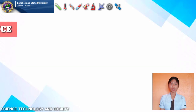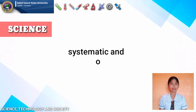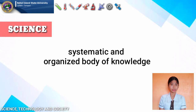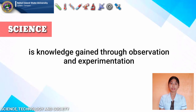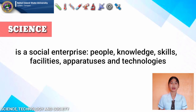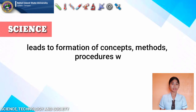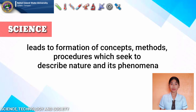Let's get into the detail of what science is. Science is a systematic and organized body of knowledge that describes the nature of our universe. It is knowledge gained through observation and experimentation. It is a social enterprise involving knowledge, people, skills, facilities, apparatus, and technologies, leading to the formation of concepts, methods, principles, theories, laws, and procedures which seek to describe and explain nature and its phenomena.